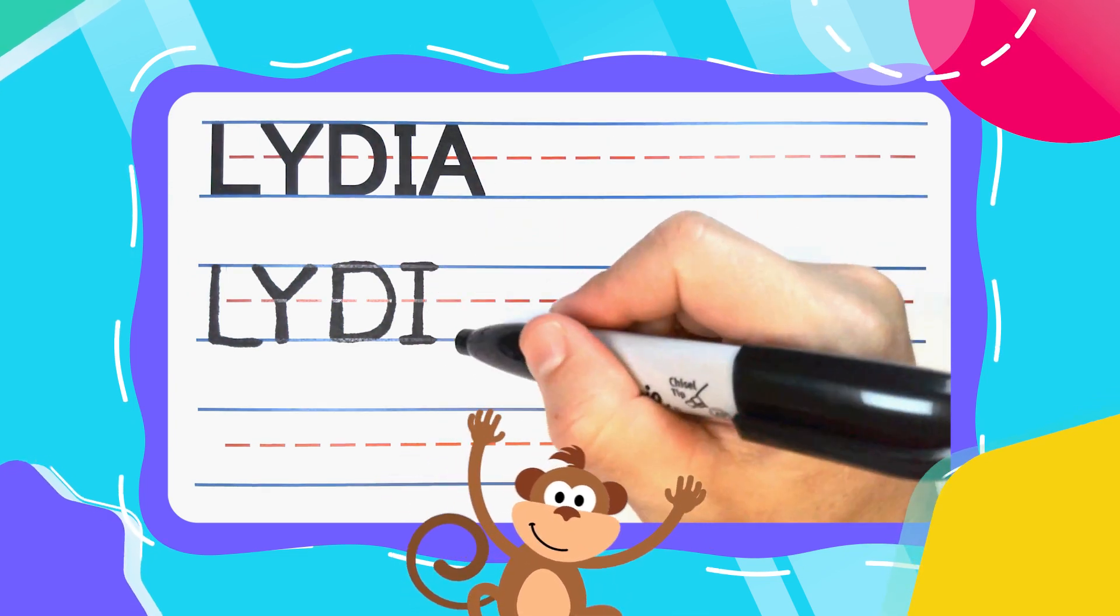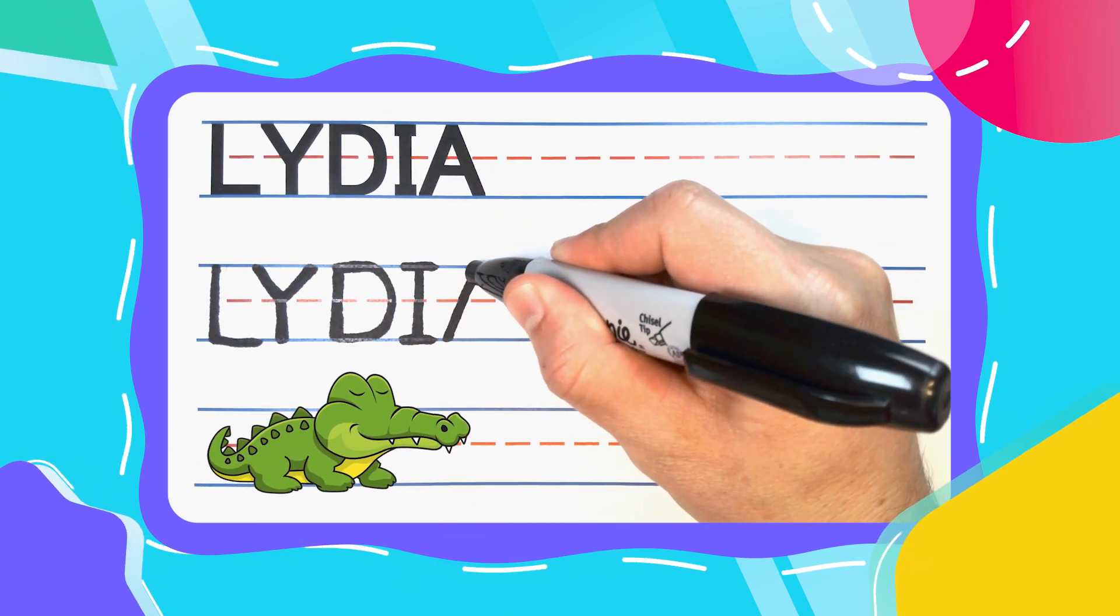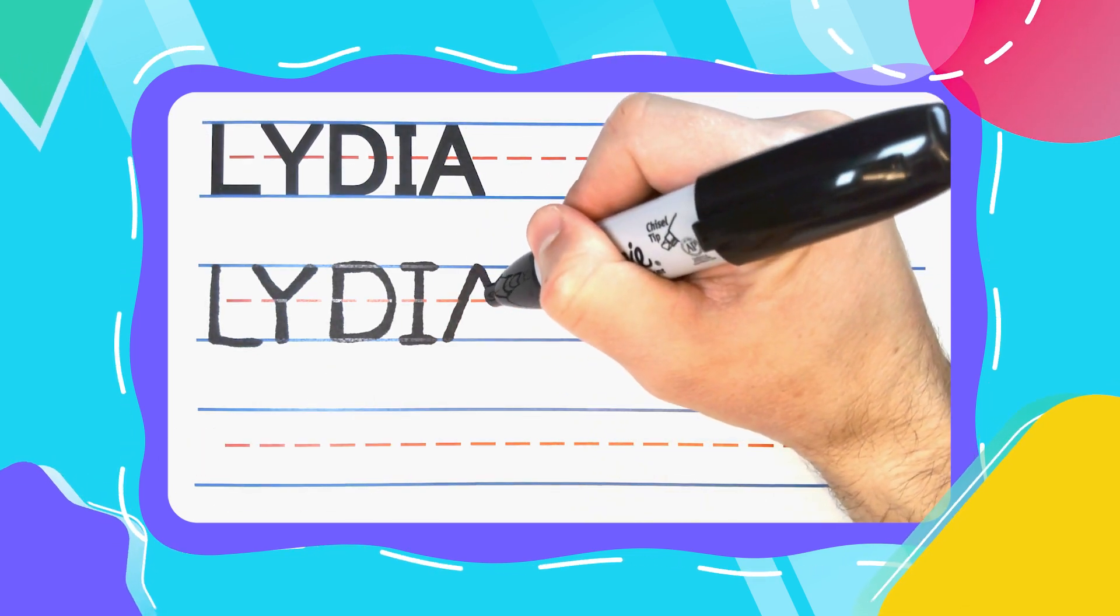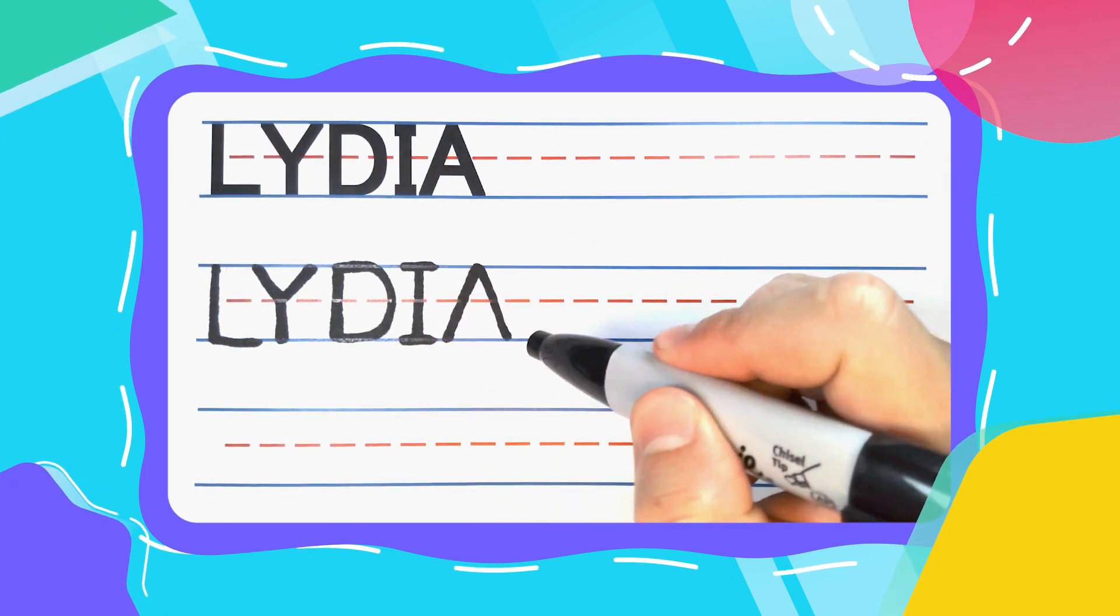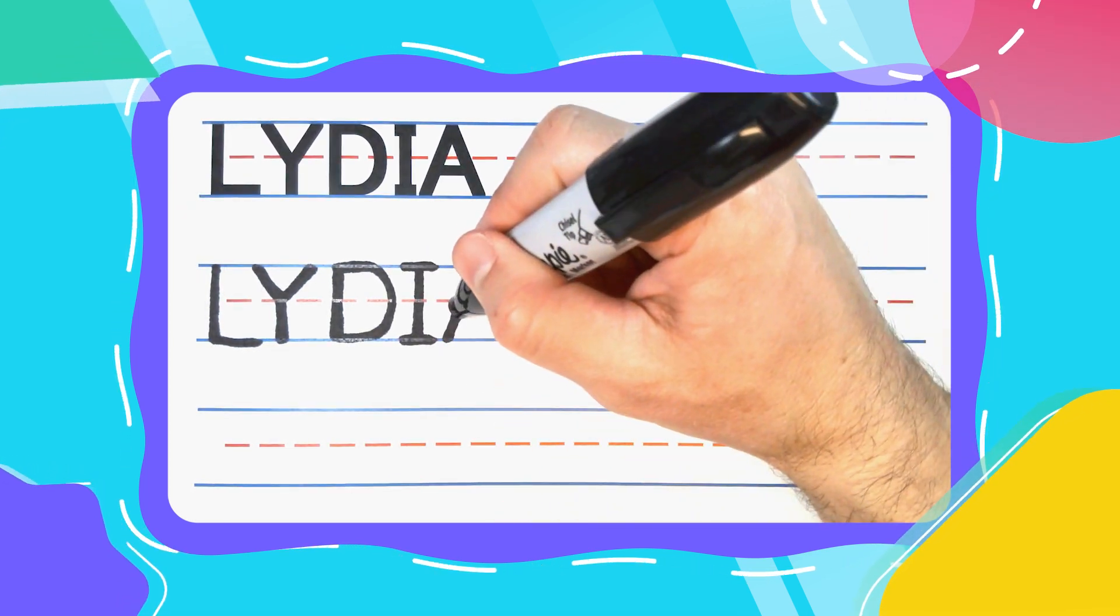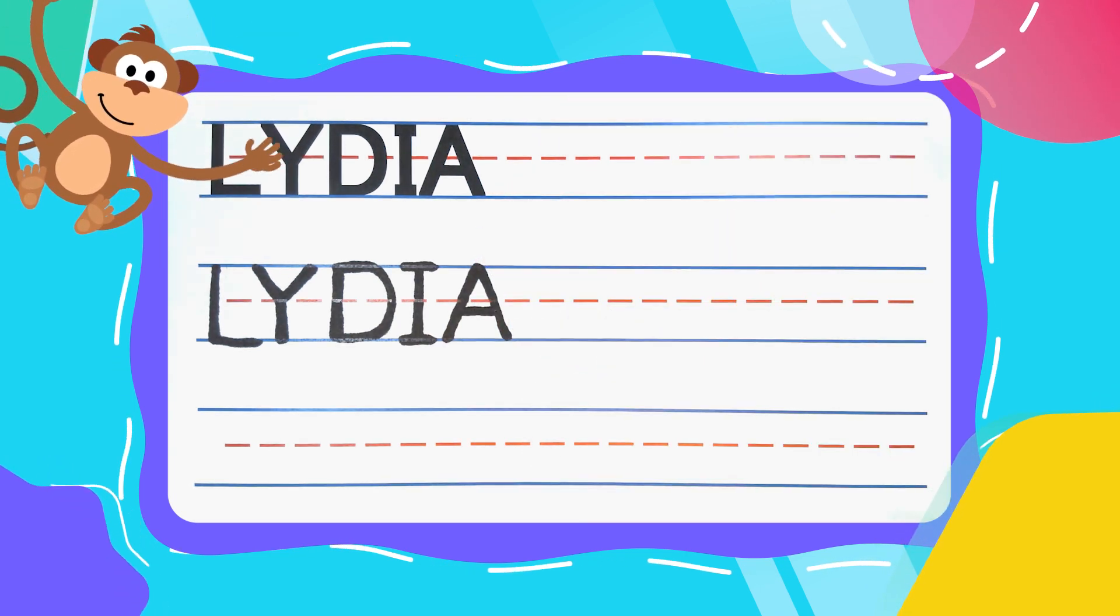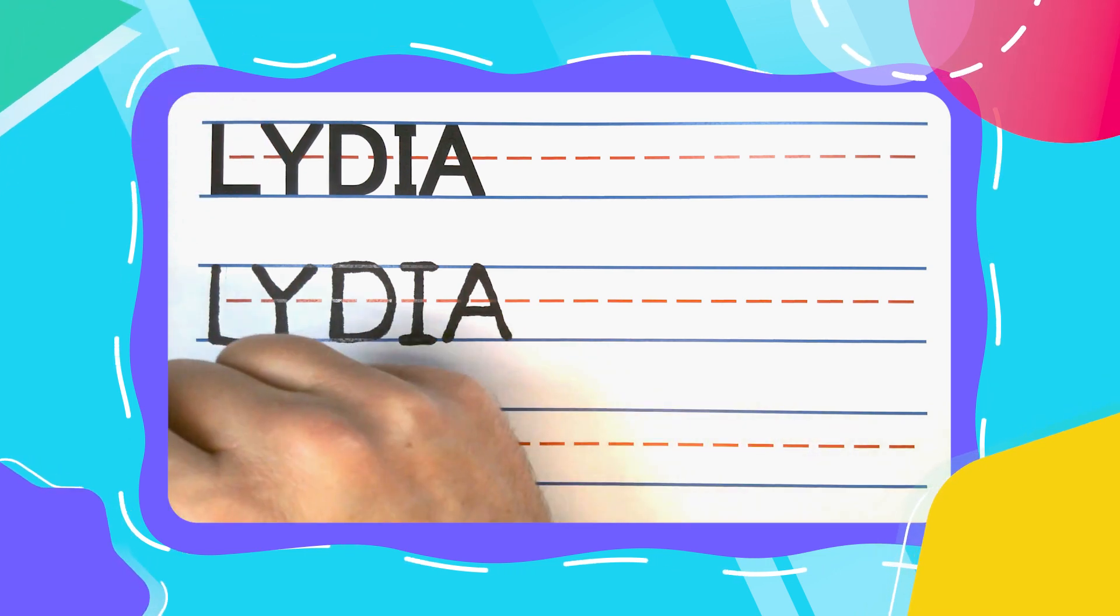Alright friends, the next letter is an alligator A. And alligator A's start with a diagonal line up. Keep your pen there and diagonal right back down to the bottom. You just made an open alligator mouth that needs to be closed with some alligator teeth. And look at this friends, L Y D I A spells Lydia.